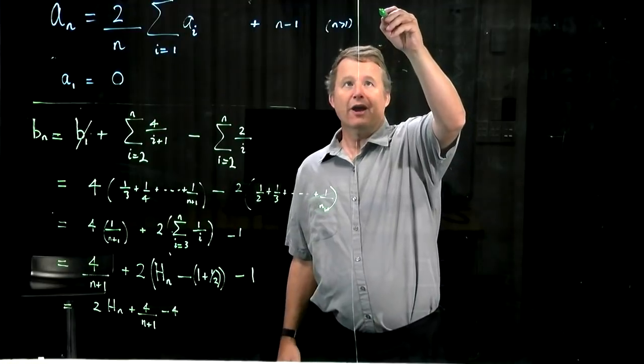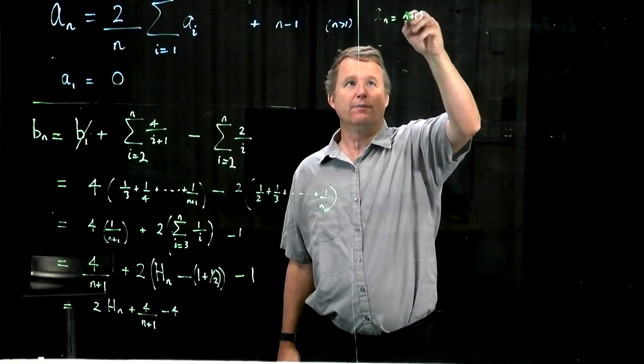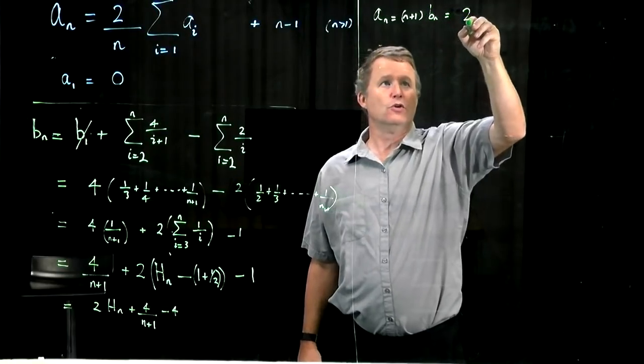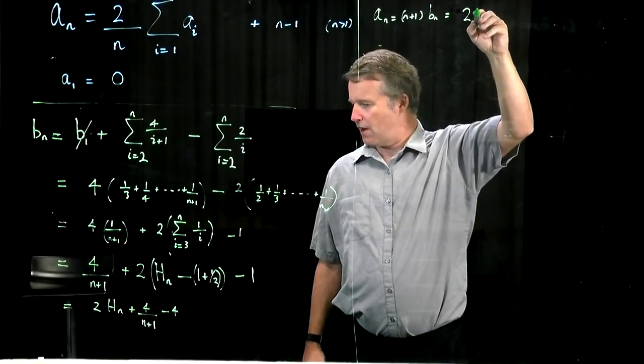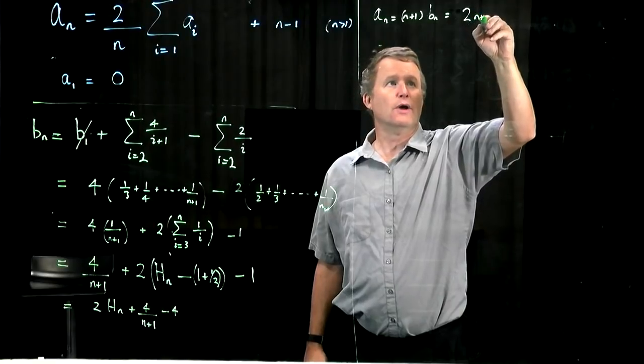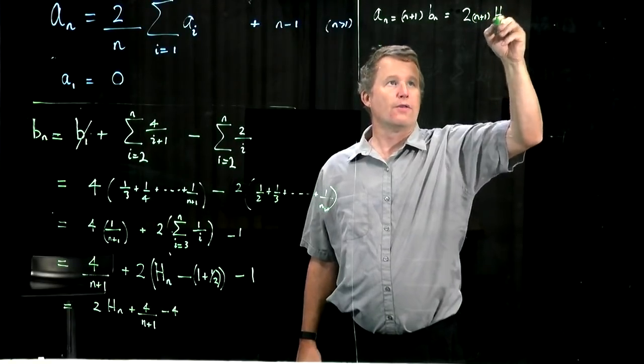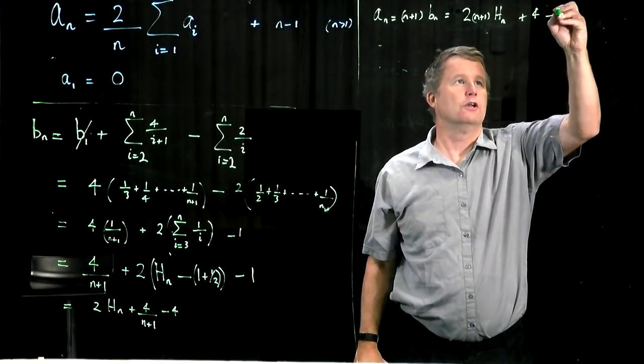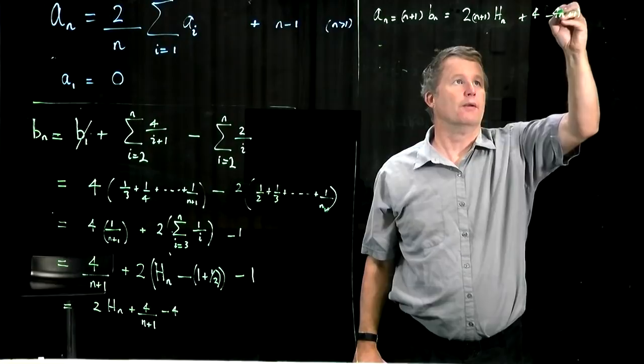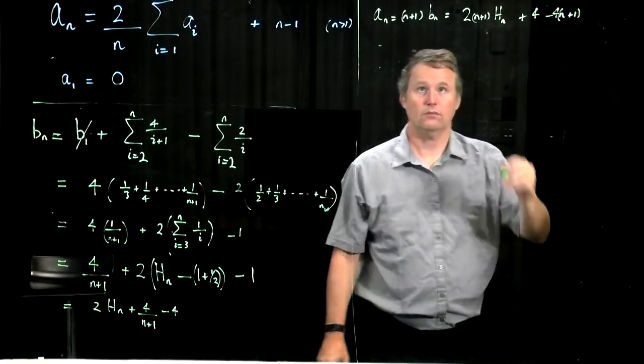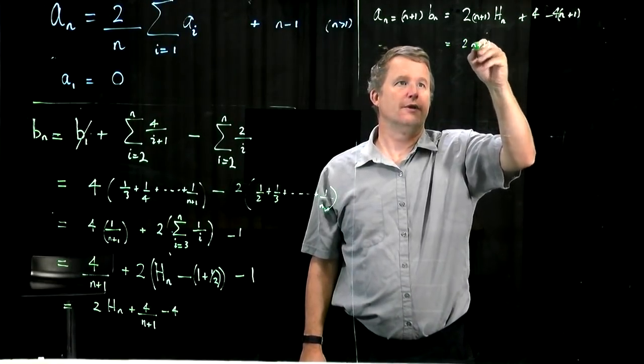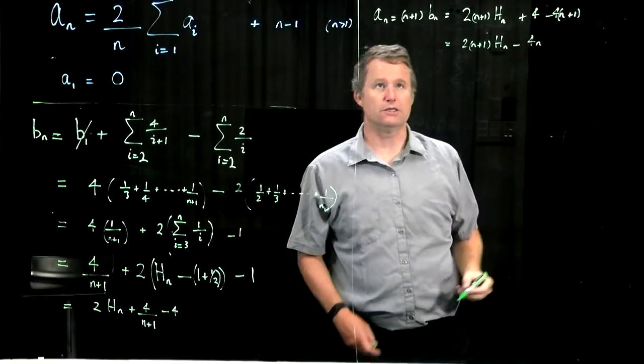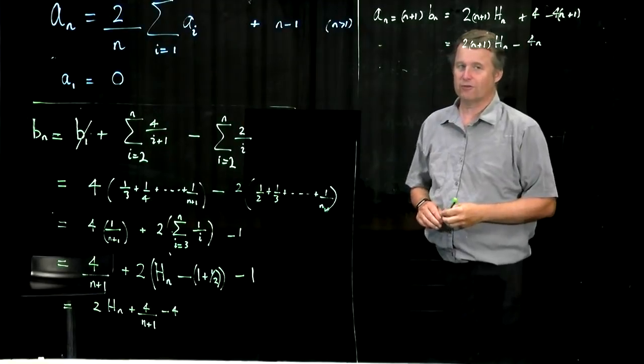And therefore an, which is n plus 1 times bn, that's 2 times n plus 1 times hn plus 4 minus 4 times n plus 1. And that's the best answer we're going to get for the average case running time.